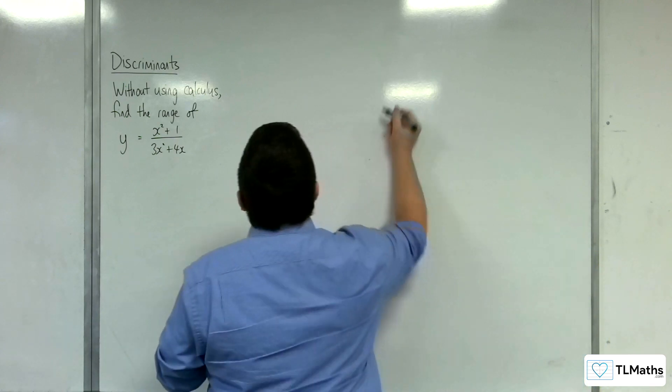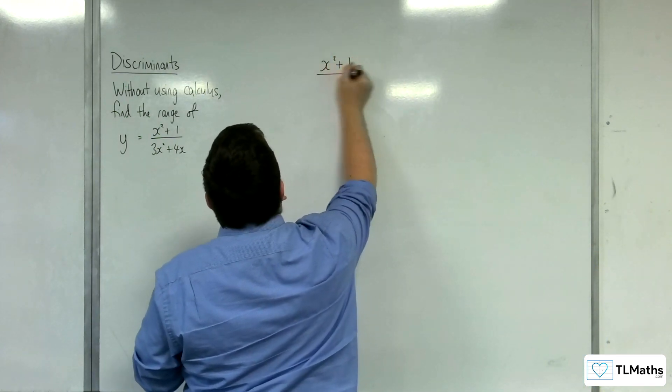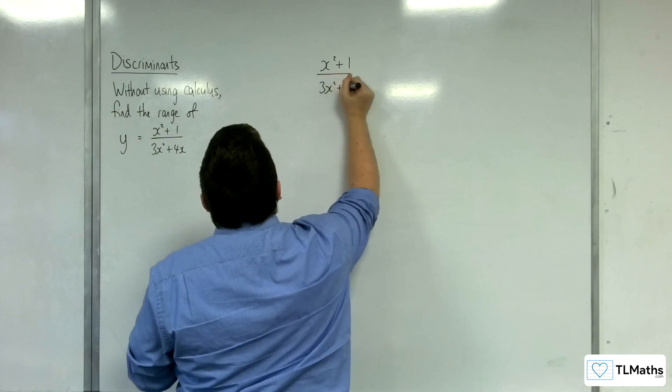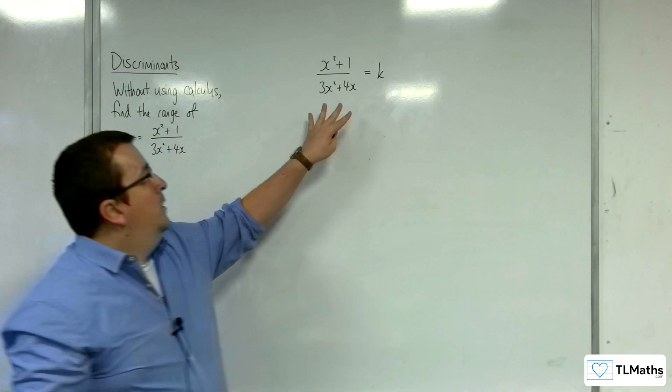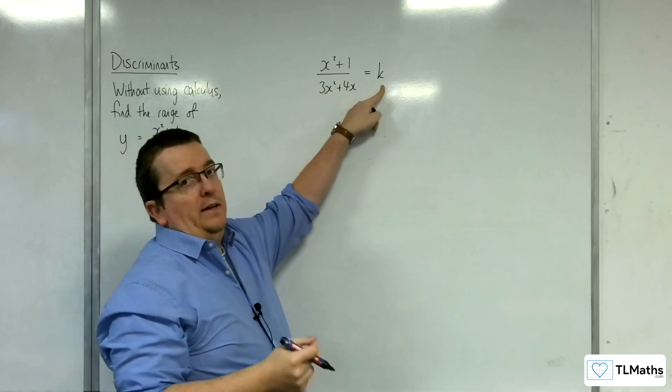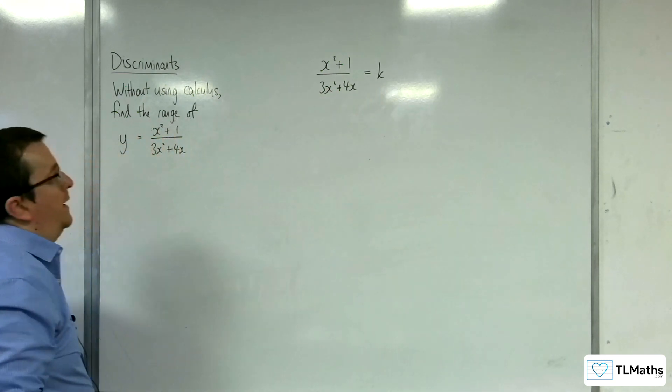So the way to do that is to put it equal to k. So we want to find out for which values this curve intercepts y equals k. Effectively, that's what we're doing here.